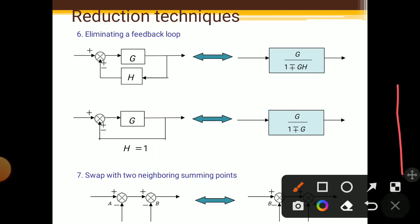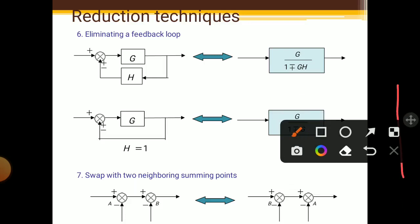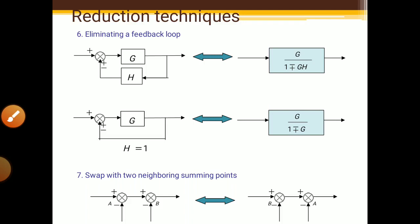The next rule is swapping two neighboring summing points. Here two neighboring summing points A and B are shown. These are summing points near to each other, and we can switch their positions — we can write B first and A later. We can change their signals also, so A can take the position of B and B can take the position of A.